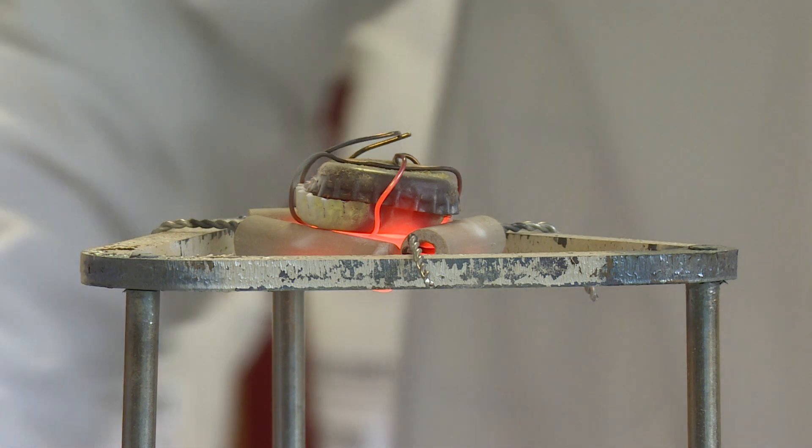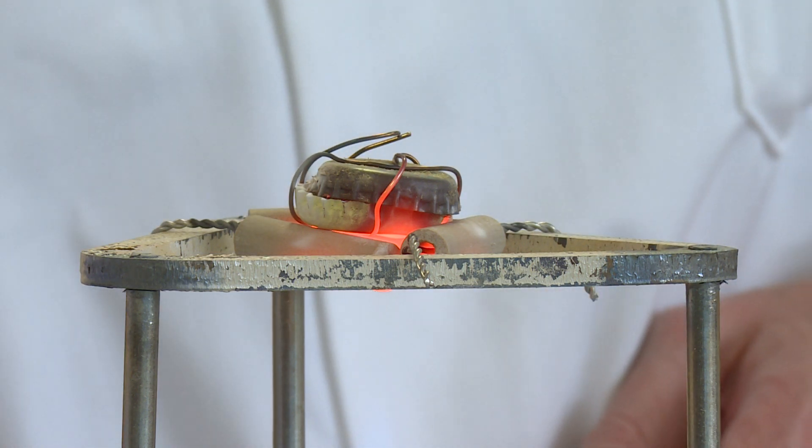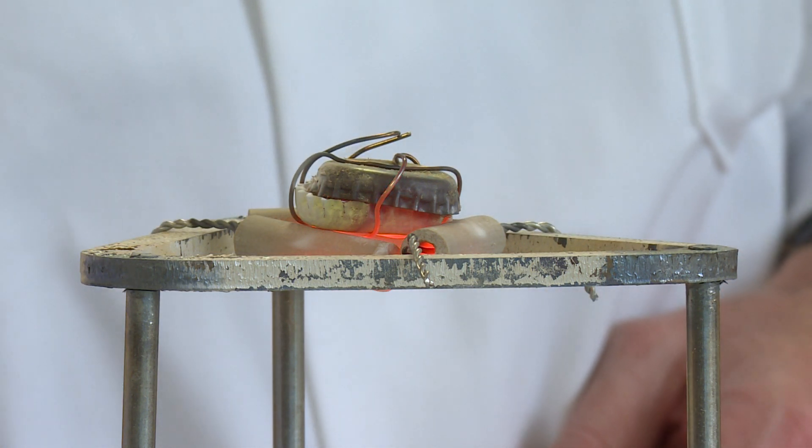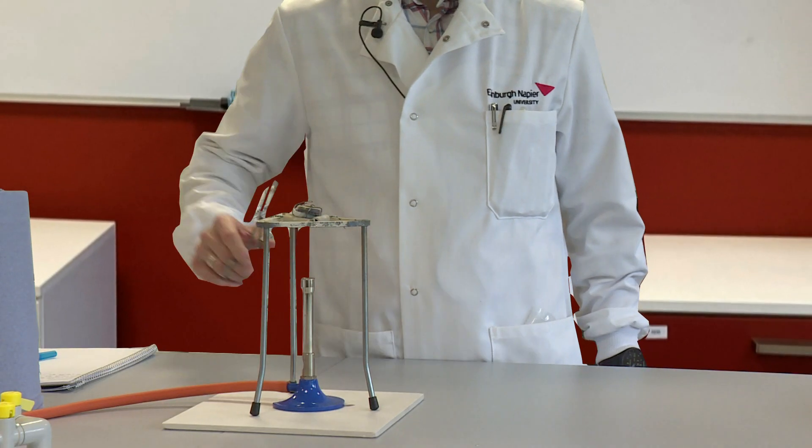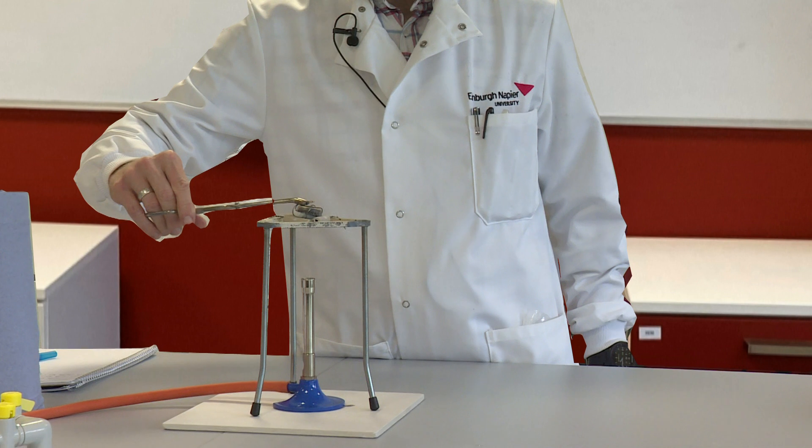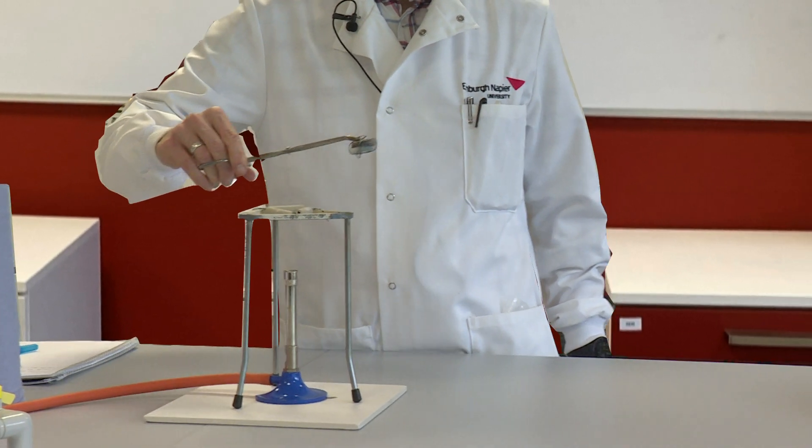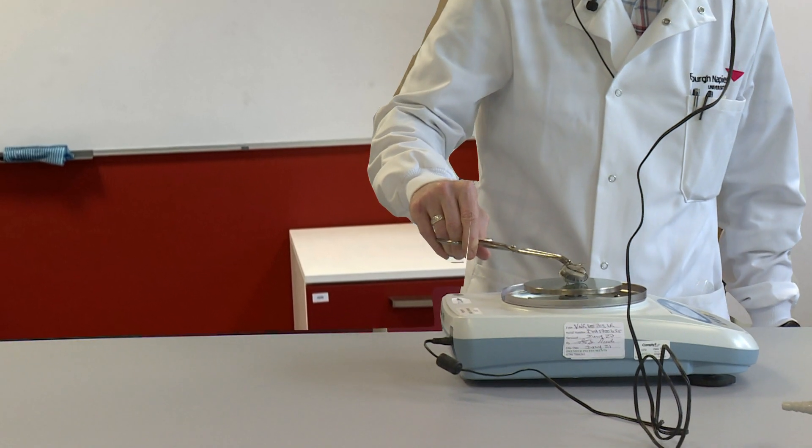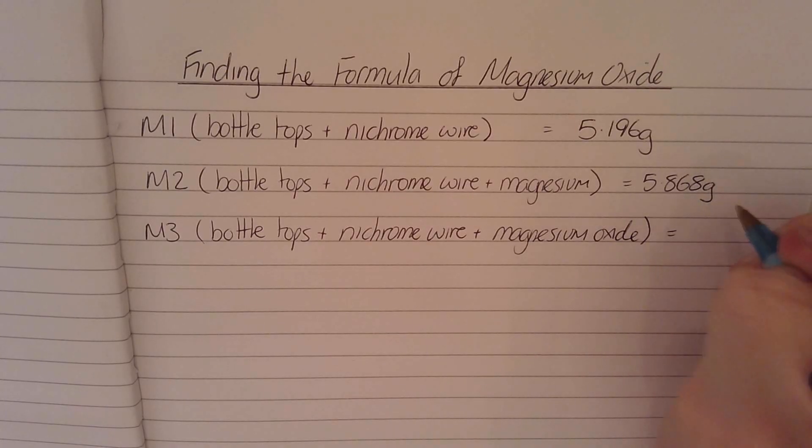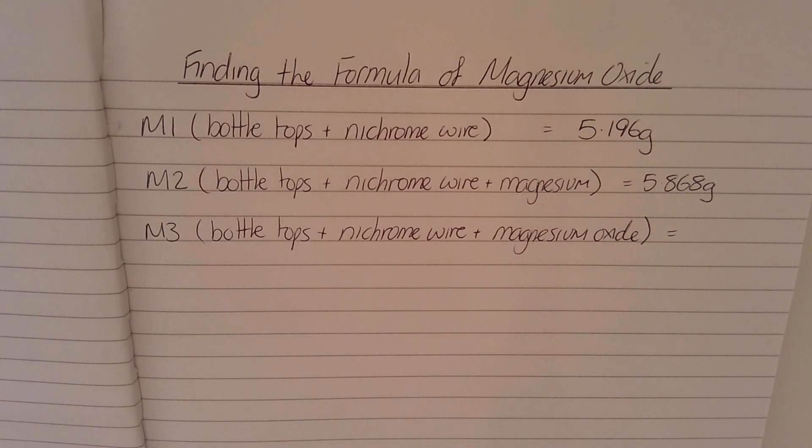So we'll now turn the Bunsen burner off, and we'll allow that to cool for a few minutes. If we now transfer the bottle tops and re-weigh them, the mass is now 6.332 grams.